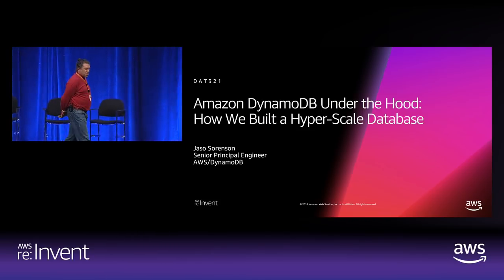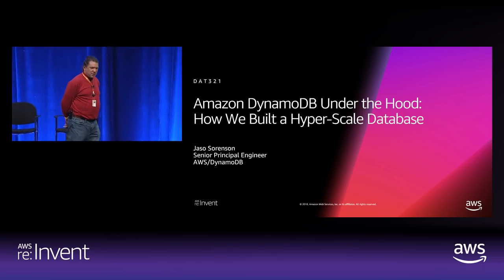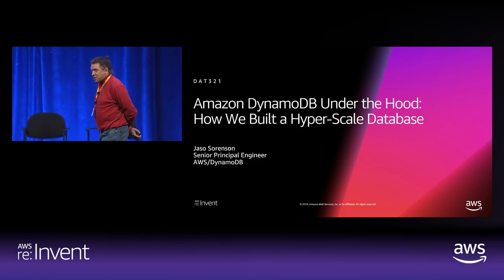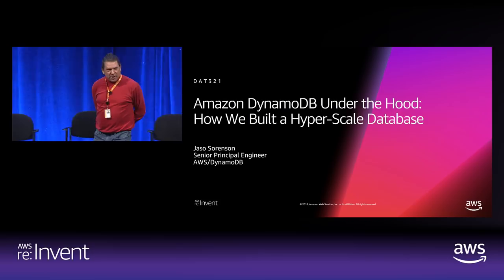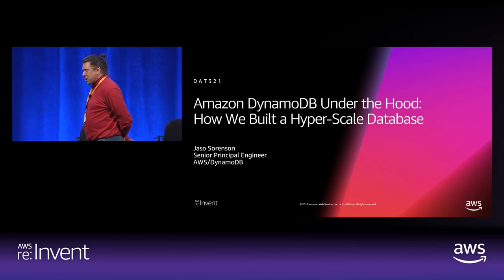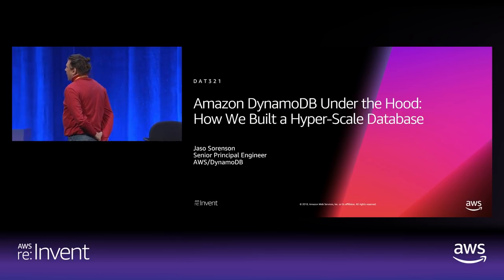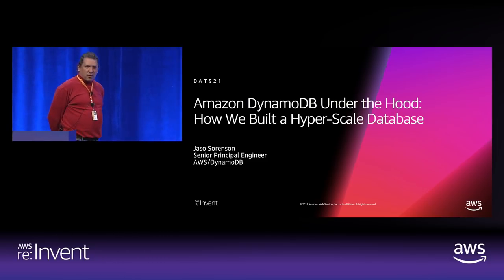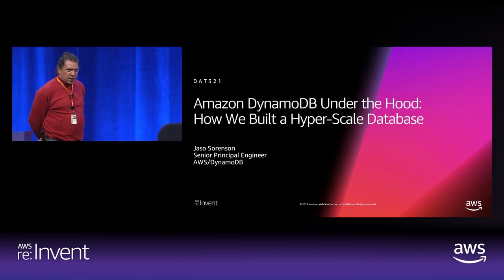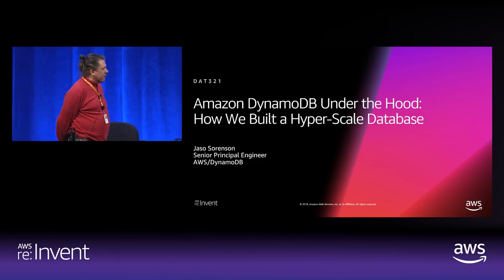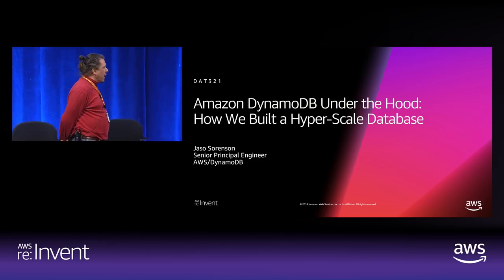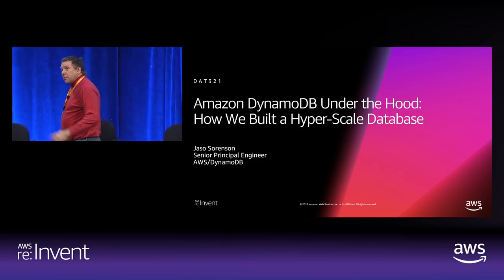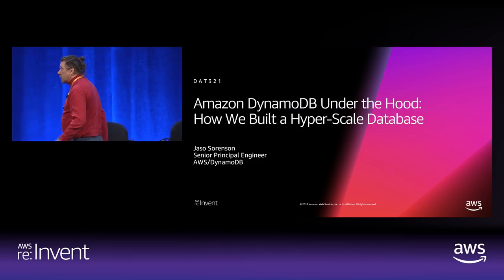My name is Jasso Sorensen — technically my name is James Christopher Sorensen III, but Jasso is my Amazon-given name. If you want to email me, email jasso@amazon.com. I'm a senior principal engineer at Amazon and I've been with AWS for about 14 years. I was one of the original developers on S3, I launched our IoT product, and for the last couple of years I've been working on DynamoDB.